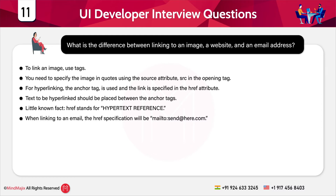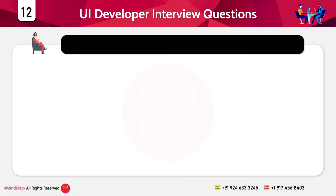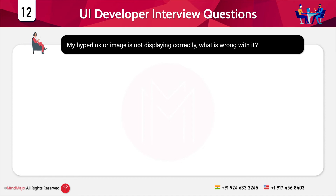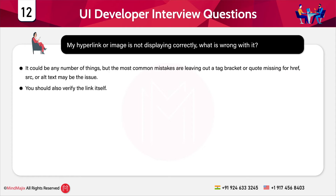When linking to an email, the href specification will be 'mailto:' followed by the email address. The next question is a scenario-based one where the interviewer wants to know whether you have real hands-on experience. The question is: my hyperlink or image is not being displayed correctly — what should be done to rectify this? The most common mistakes include leaving out a tag bracket, a missing quote for href or source, or alternate text may be the issue. You should also verify the link itself.